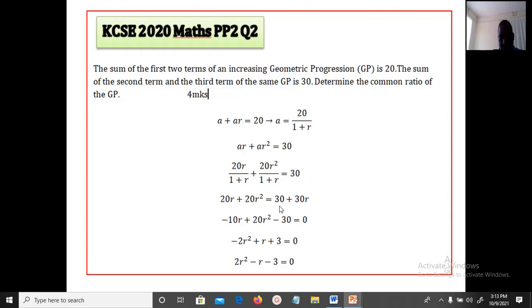Now we are going to solve this. We are going to be multiplying through by the LCM, which is 1 plus r. So we multiply each value by 1 plus r and these two denominators are going to cancel. We multiply 30 times 1 plus r, we get 30 plus 30r. So here we are going to solve this and make it a quadratic equation in which we are going to end up with 2r squared minus r minus 3 is equal to 0.